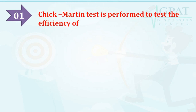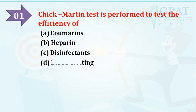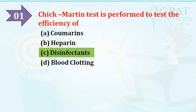Chick Martin test is performed to test the efficiency of — and the options are: coumarin, hyperin, disinfectants, or blood clotting. The right answer is disinfectants.